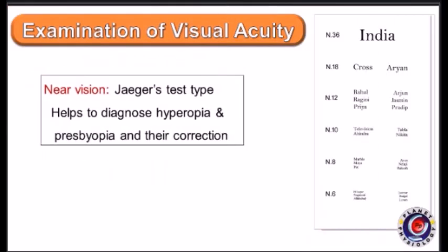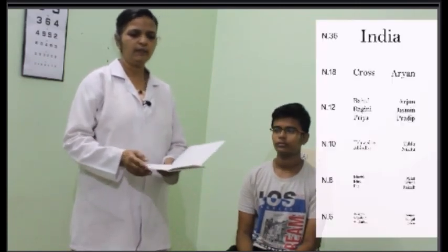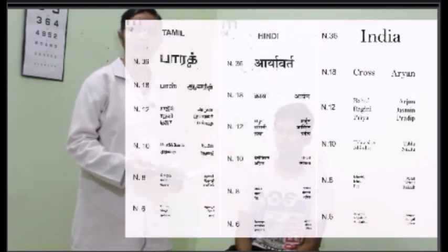Now let us see how to examine near vision. It is done by using Jaeger's test type. The subject is asked to hold the chart at 25 cm distance and read it from top to bottom — first with the right eye, then with the left, then with both eyes. The finding is expressed as the smallest type which the subject can read comfortably. Jaeger's test type is also available in various languages, pictures, and Landolt's rings.